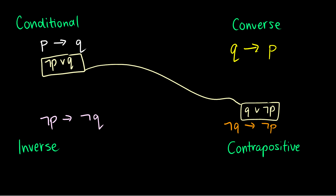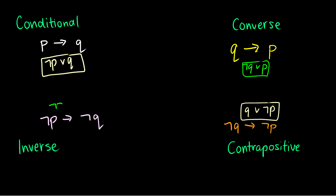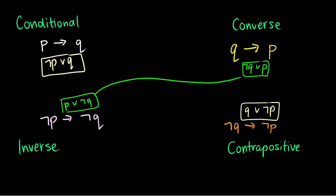Similarly, the converse and the inverse are equivalent to each other. The converse Q arrow P is the same as not Q or P, and the inverse gives not not P or not Q, which by double negation also reduces to P or not Q — so these are also equivalent.